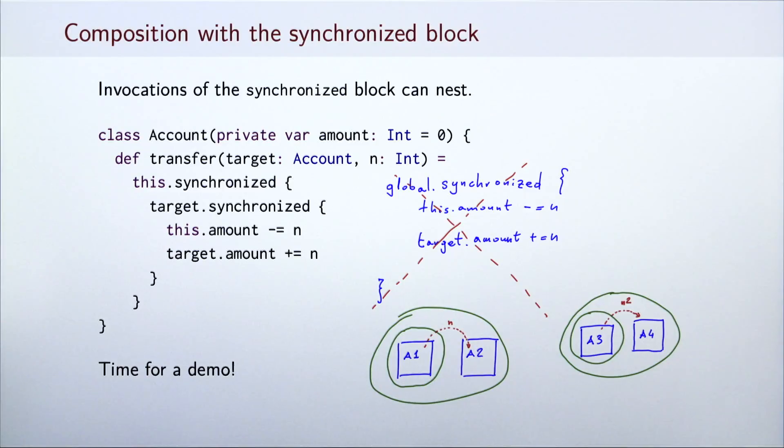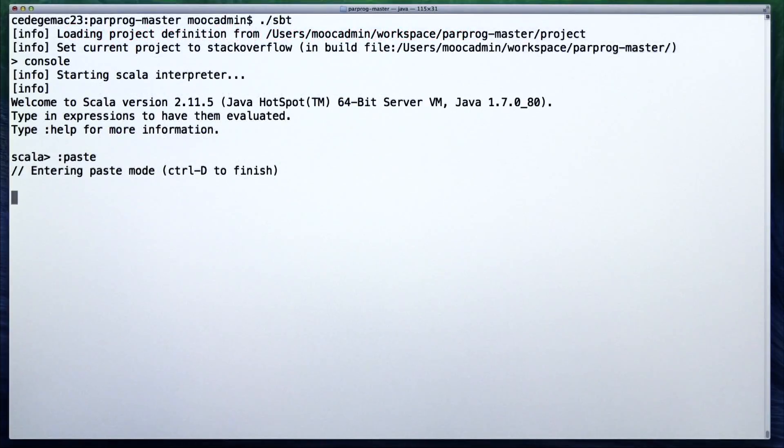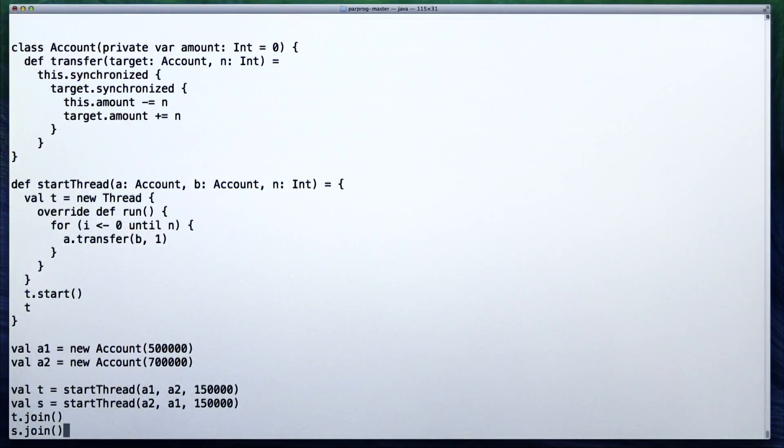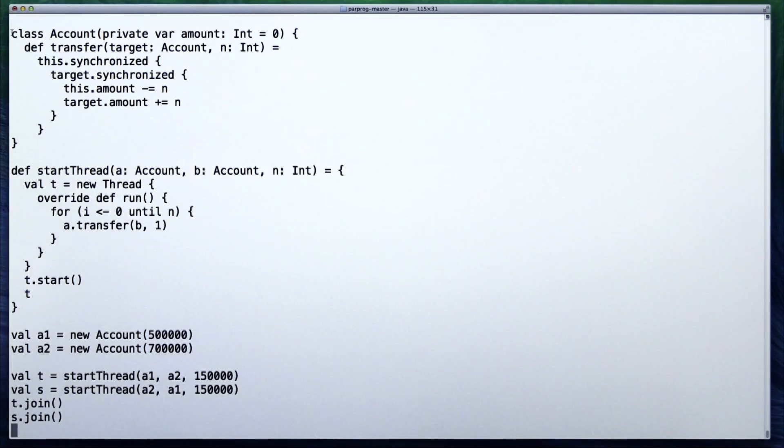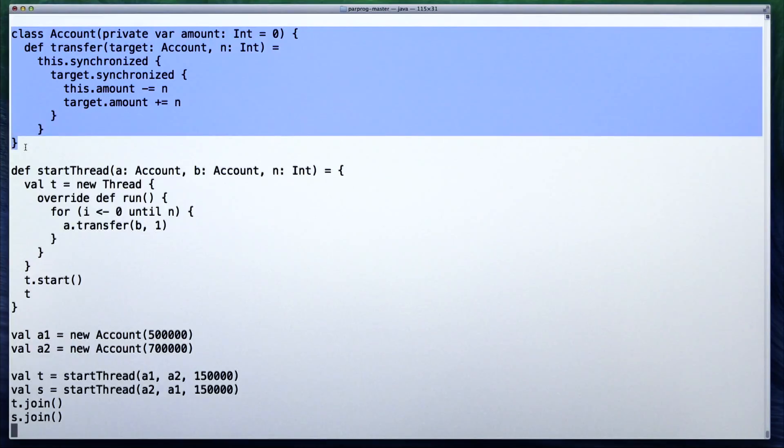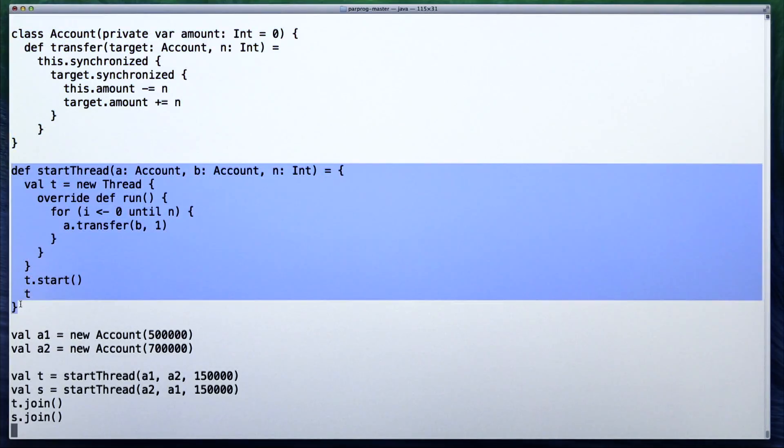Let's see this in a demo. In this demo, we will paste the entire snippet of the code and then explain it. We first define the account class as shown in the slides. Then, we declare a method startThread which given two accounts a and b and an amount n starts a new thread which transfers the amount n by calling transfer with the argument 1 n times. The thread is then started and returned.